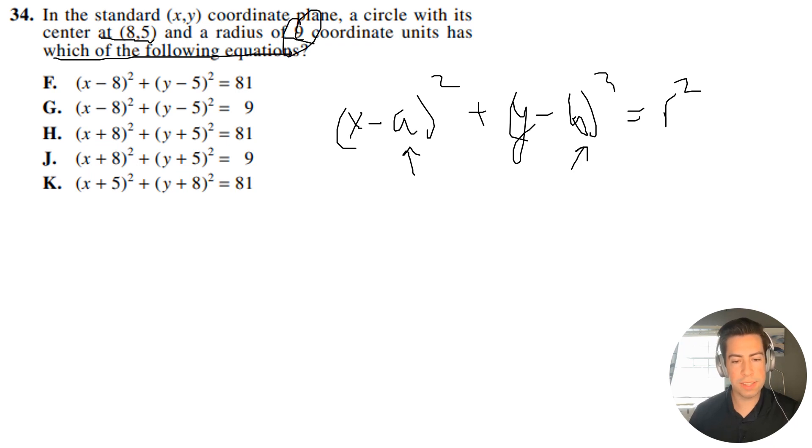First, if our radius is 9, then 9² = 81, so the right side should equal 81. That means J is automatically out and G is automatically out.